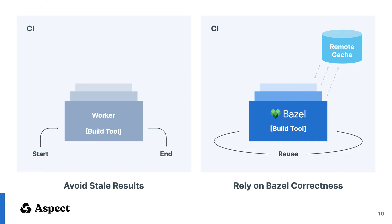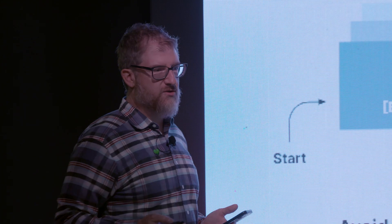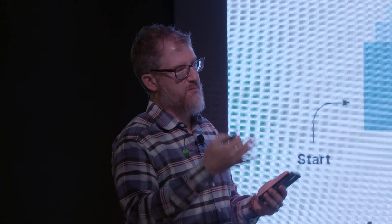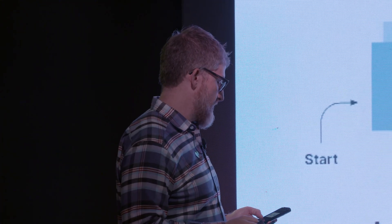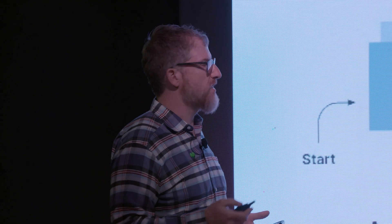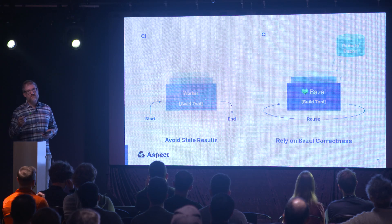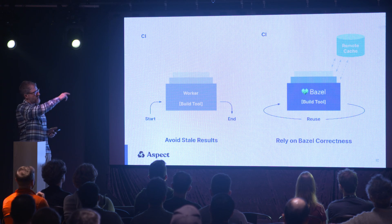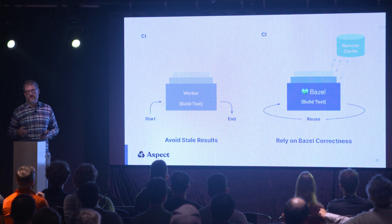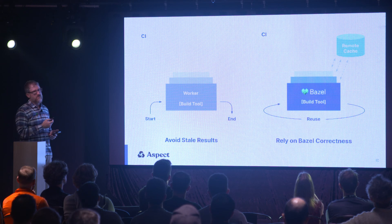The first step is probably kind of obvious: persistent versus ephemeral runners. On CI, in the before state, you run a build tool and in order to avoid stale results you want an ephemeral runner every time — a new instance of the build runner that comes up. That's because you don't trust the build tool to give you the right results. But Bazel is designed the opposite way — Bazel is correct. We want to rely on it to be incremental, and in order for it to be fast, we have to reuse the workers. We also add a remote cache so that all of these workers can share their intermediate build artifacts with each other. This is what we have to do to make Bazel fast.